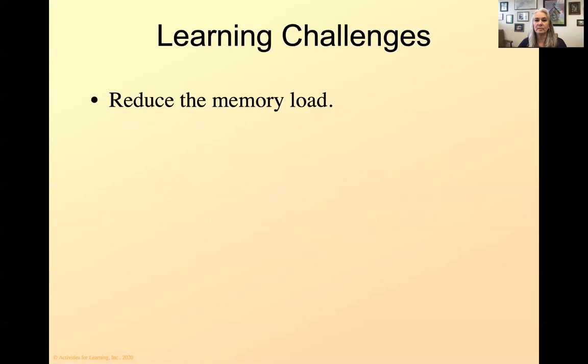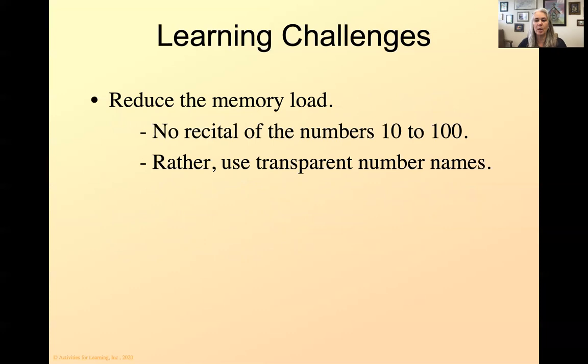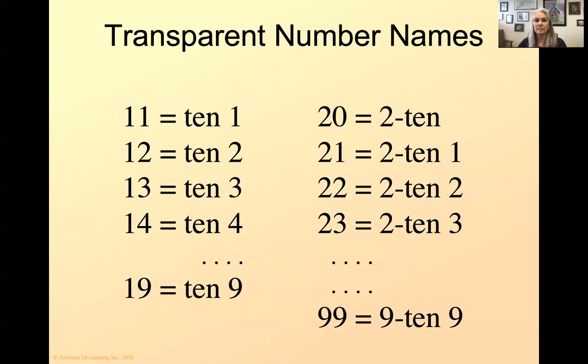When a child has learning challenges, we want to reduce the memory load. They can't memorize things. So we don't want them to recite the numbers 10 to 100. We want them to use the transparent number names, number names like we talked about here. It's like 7-10. So this is what the transparent number names look like. So 10 is going to be 10. 11 would be 10-1, 10-2, 10-3, 10-4, 10-5, 10-6, 10-7, 10-8, 10-9, 2-10. We're going to continue from there. We only go up to 9-10-9 because our English language only has from 11 to 99 goofed up. All the rest makes sense.